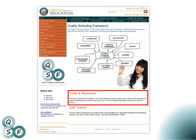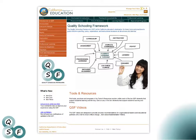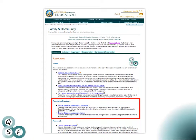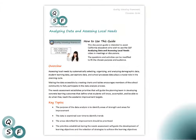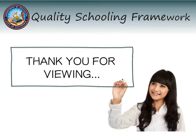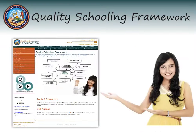To locate tools and resources to help with data analysis and needs assessment, visit the QSF website. Explore the QSF elements for family and community, culture and climate, and equity to find suggested practices to engage the various members of your school community. Additionally, review the resources associated with this video, including a discussion guide that provides ideas for using this video with your school community. Thank you for viewing this overview of analyzing data and assessing local needs. We encourage you to use and share this resource within your school and district community as you work to ensure that all your students learn and thrive.